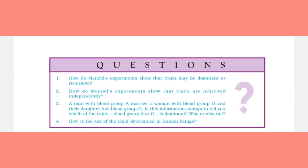Questions. 1. How do Mendel's experiments show that traits may be dominant or recessive? 2. How do Mendel's experiments show that traits are inherited independently? 3. A man with blood group A marries a woman with blood group O and their daughter has blood group O. Is this information enough to tell you which of the traits — blood group A or O — is dominant? Why or why not? 4. How is the sex of the child determined in human beings?